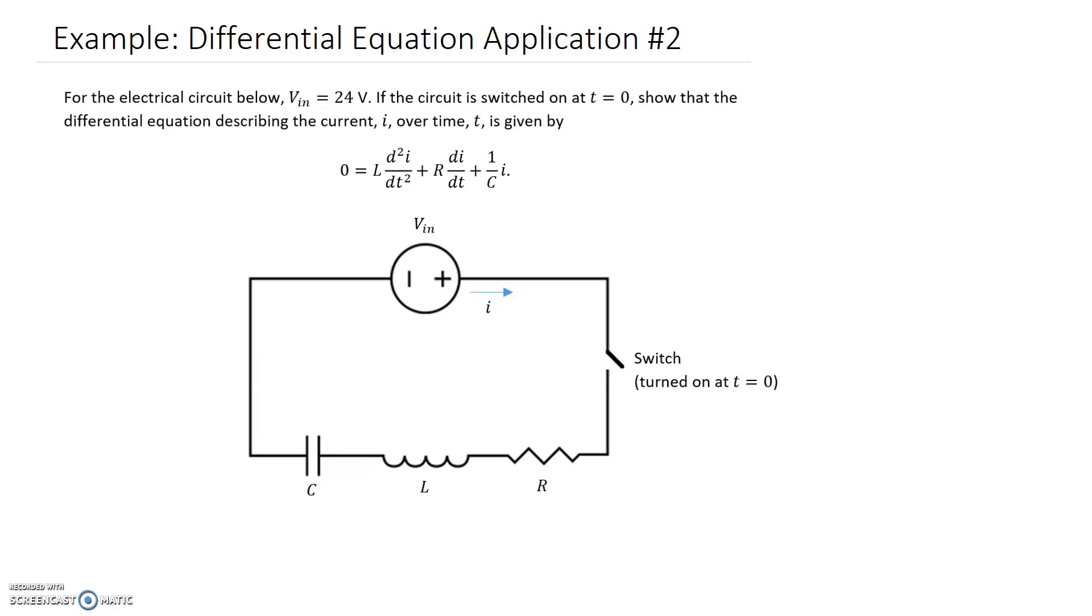This question we're looking at applying differential equations to an electrical circuit application. For the electrical circuit shown, the V_in input voltage is equal to 24 volts. If the circuit is switched on at t equals 0, we need to show that the differential equation describing the current over time t is given by this one here.